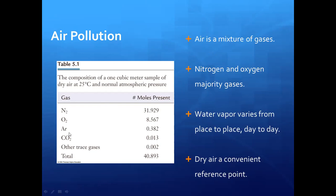Table 5.1 shows the composition of one cubic meter of dry air at 25 degrees Celsius and normal atmospheric pressure. Nitrogen has the highest percentage; oxygen is the second highest. Water vapor varies from place to place and day to day — in humid areas, water vapor content in air is high, while in drier areas it is low.